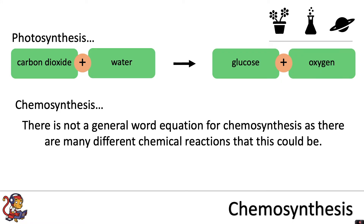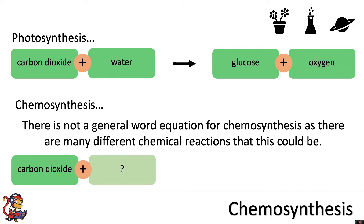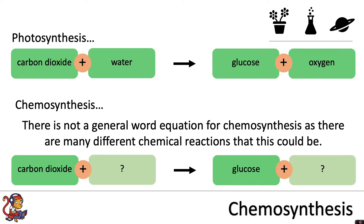In chemosynthesis, there is not a general word equation, as there are many different chemical reactions that this could be. But often, one of the reactants is carbon dioxide, and that will react with another chemical to produce glucose and another product.